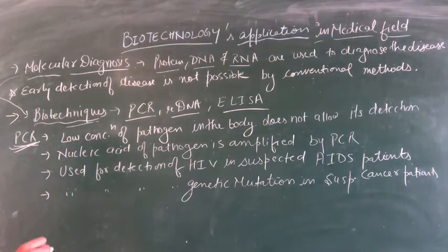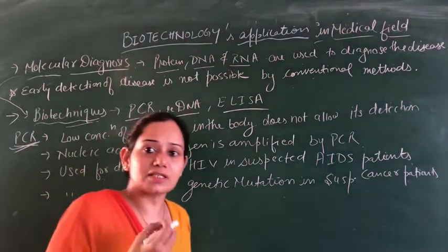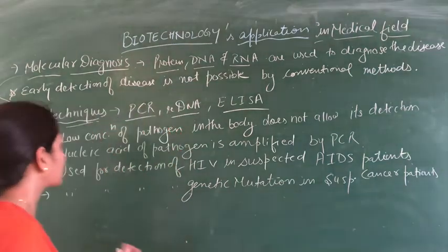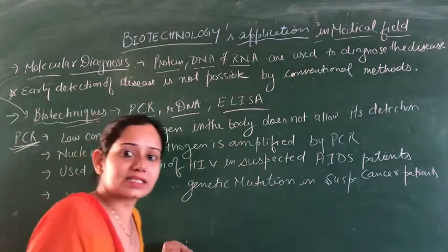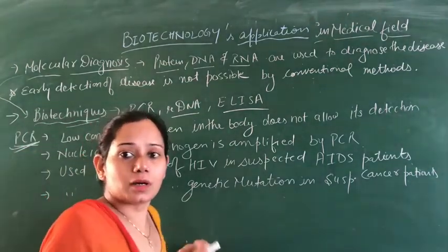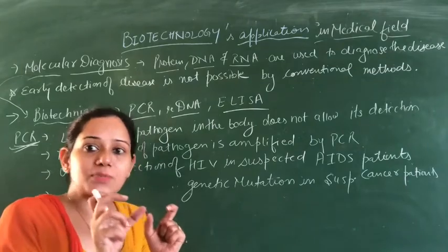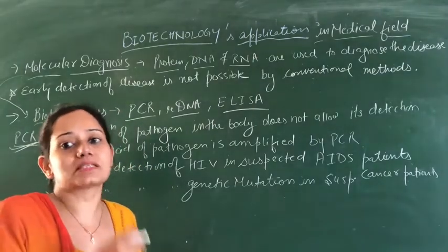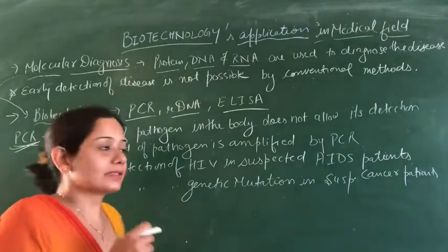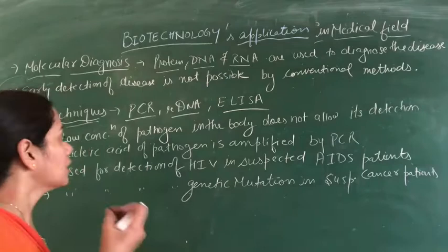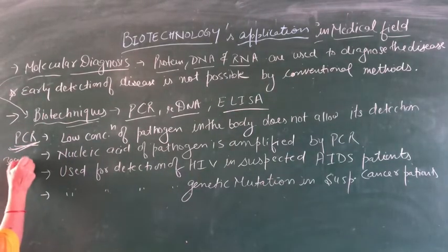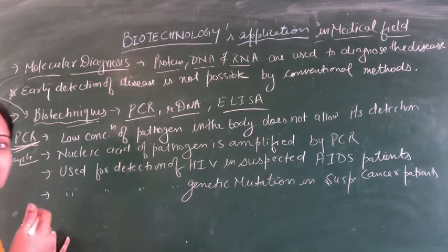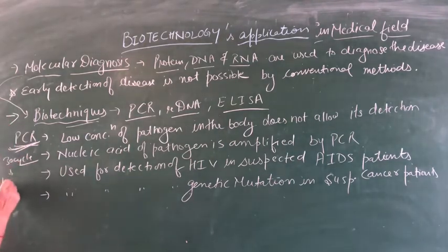PCR stands for Polymerase Chain Reaction. This uses the enzyme DNA polymerase. The desired piece of DNA is made into multiple copies with the help of primers. If we run 30 cycles of PCR, we can produce one million copies of the desired DNA.